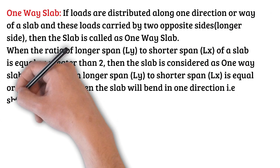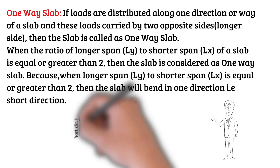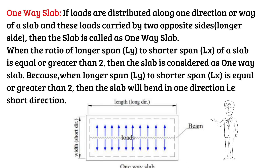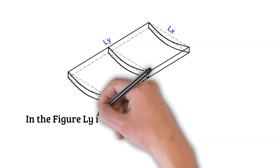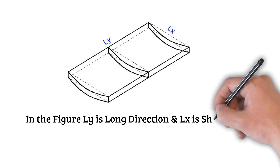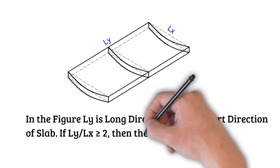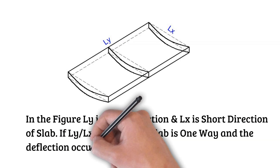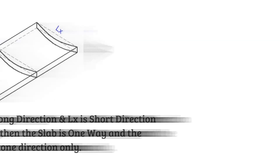When longer span ly to shorter span lx is equal or greater than two, the slab will bend in one direction — that means the short direction. Here in the figure you can see: ly is the long direction and lx is the short direction of the slab. If ly divided by lx is equal or greater than two, then the slab is one-way and deflection occurs in one direction only.